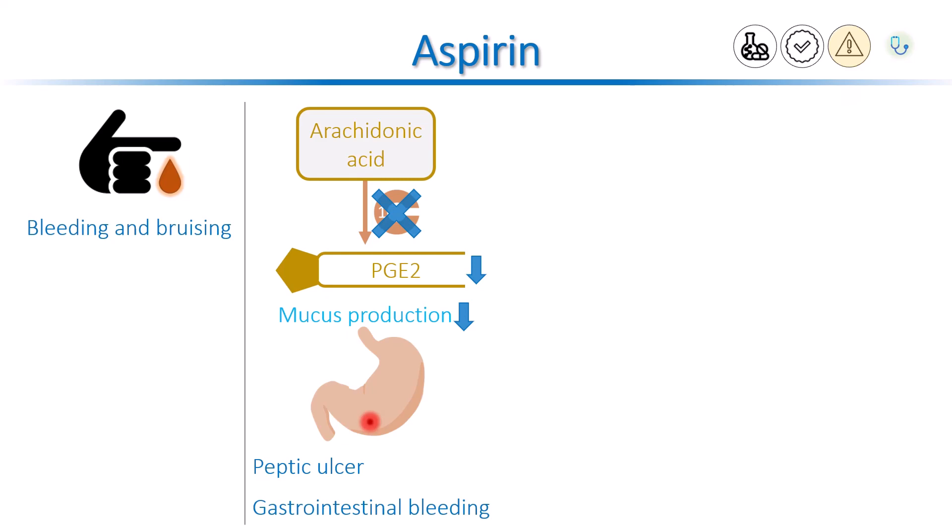Aspirin not only increases the risk of gastrointestinal bleeding, it also increases the risk of non-gastrointestinal bleeding as well, because it blocks the production of thromboxane A2 throughout the whole body.